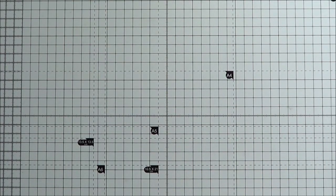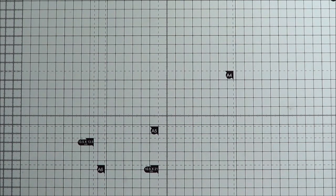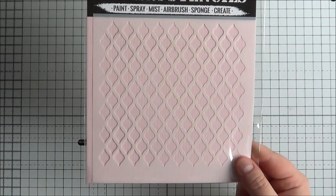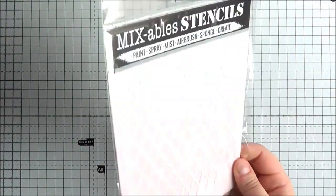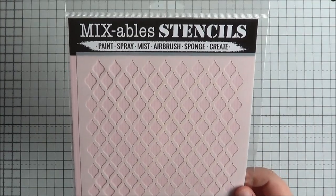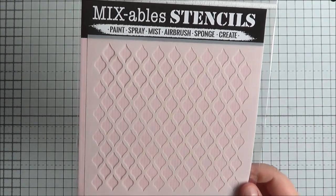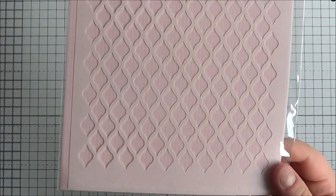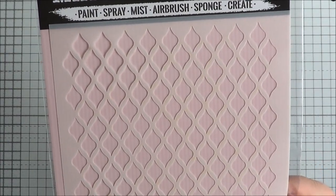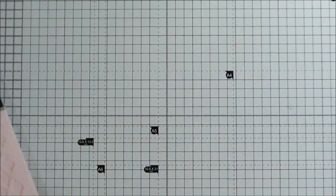Then another thing I got in February was an order from Dies to Die For. So first of all I got the stencil. This is the Fishnet stencil by MFT. I have used it already with some embossing paste. It's really pretty. I really like their stencils actually. They're really quite sturdy and nice.